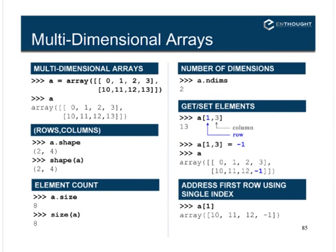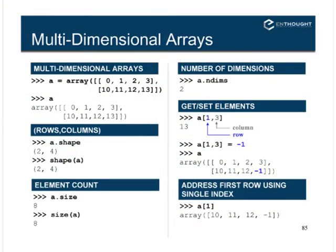Let's look at multi-dimensional arrays — one of the really powerful capabilities NumPy adds to Python. Here a = array([[0,1,2,3],[10,11,12,13]]). The first list is the first row, the second list is the second row. We can ask for its shape, which returns (2, 4) — two rows and four columns. The size is the product of the shape values: 2×4 = 8. We indeed have a two-dimensional array.